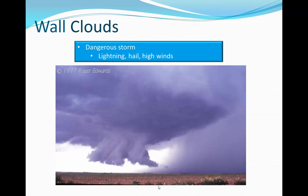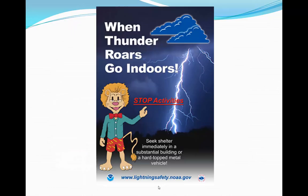The big thing about wall clouds: even though a small percentage produce tornadoes, they all form in supercell thunderstorms, which are still very dangerous storms. There's going to be lots of lightning, possibly some hail, very high winds, and torrential downpours. So take cover, go to a sturdy shelter. And remember: when thunder roars, go indoors. Thank you for watching.